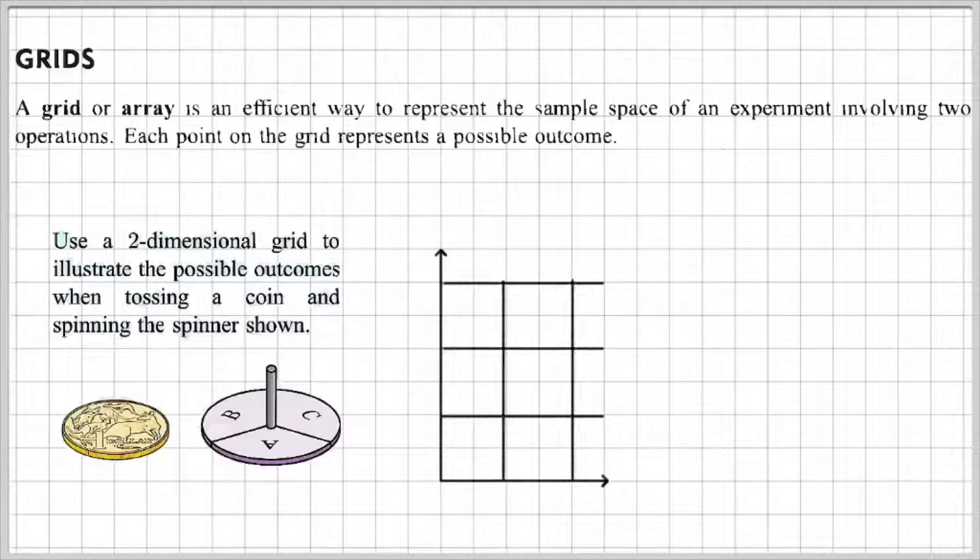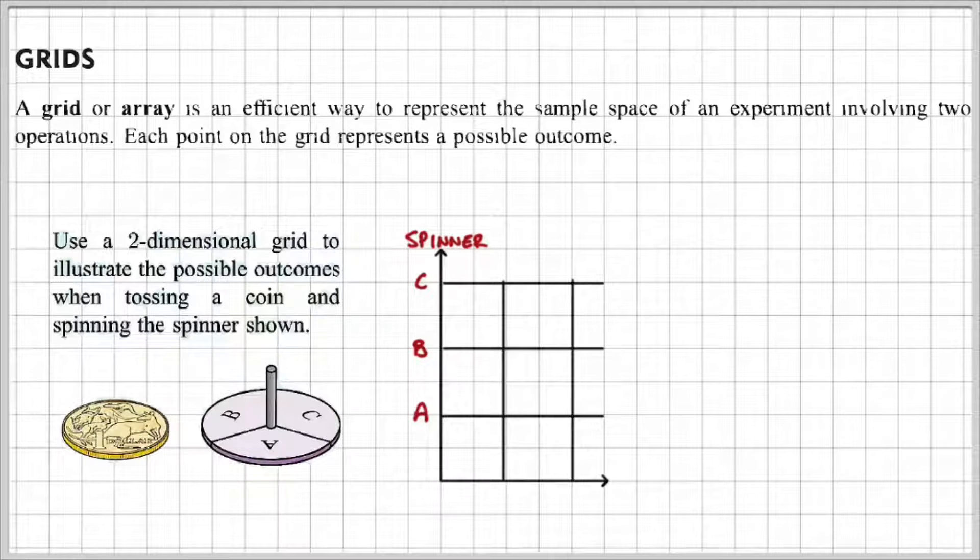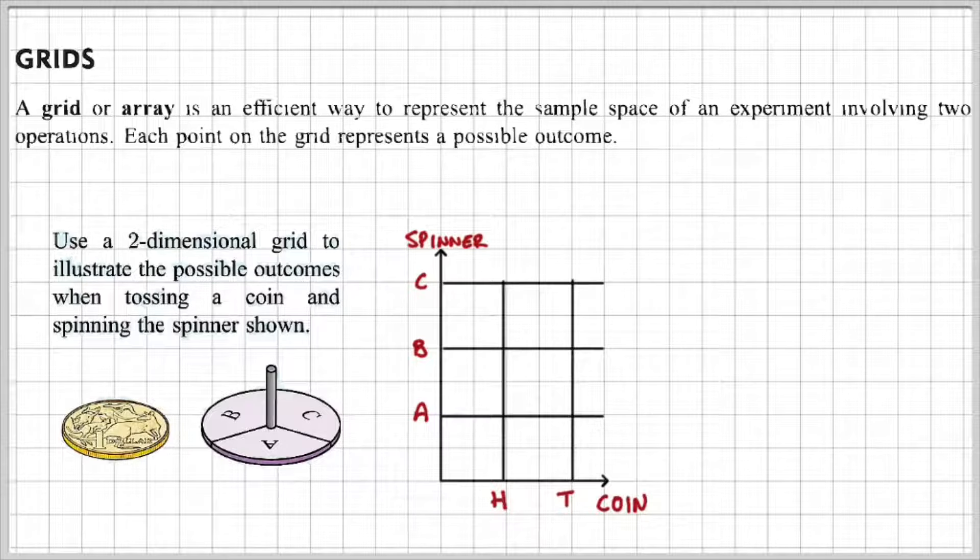If we do a grid we can label the top spinner and we have A, B, C because those are the possible outcomes of the spinner. On the horizontal axis we can write coin and then we can write the possible outcomes of a coin which are heads and tails.